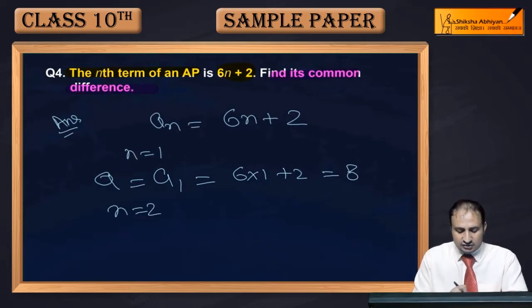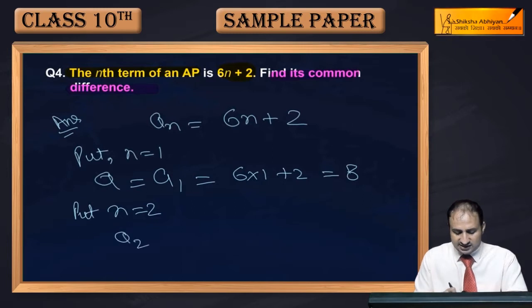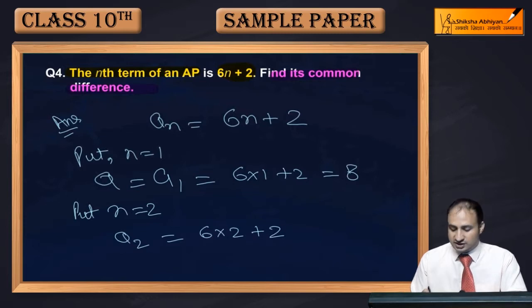Now put n equal to 2 to find the second term a2. So a2 equals 6 into 2 plus 2, which is 12 plus 2, that is equal to 14.